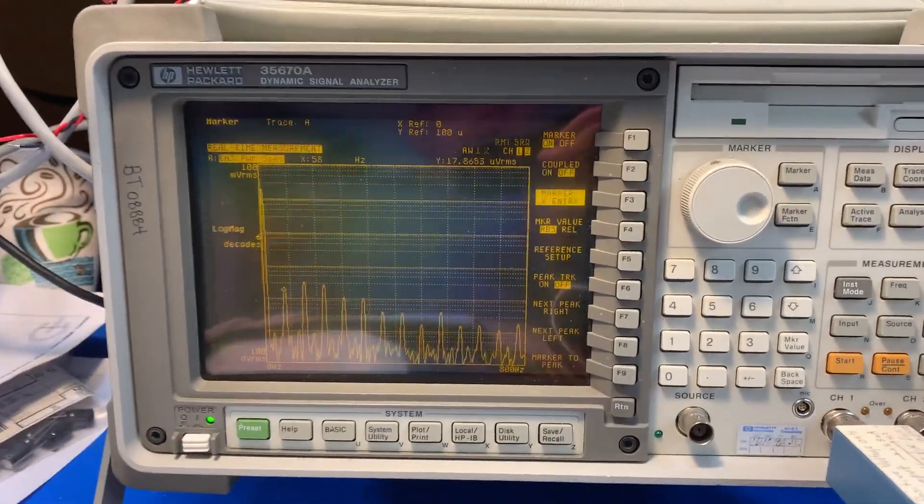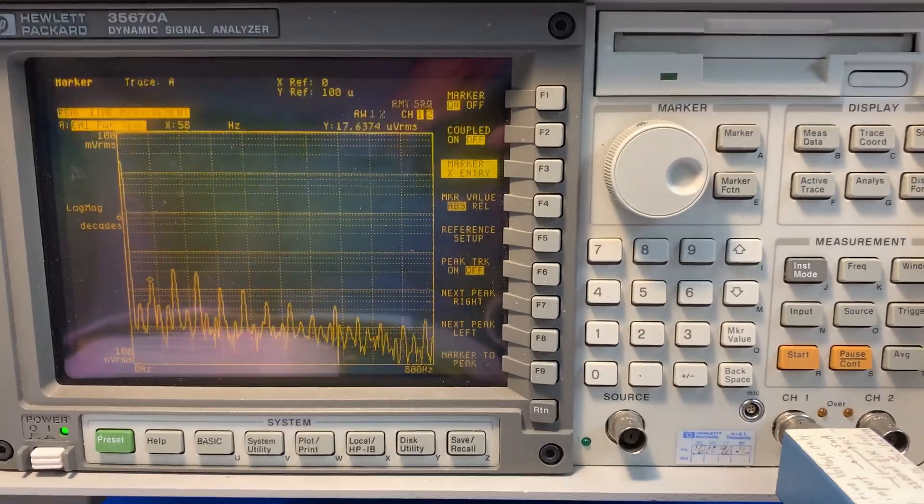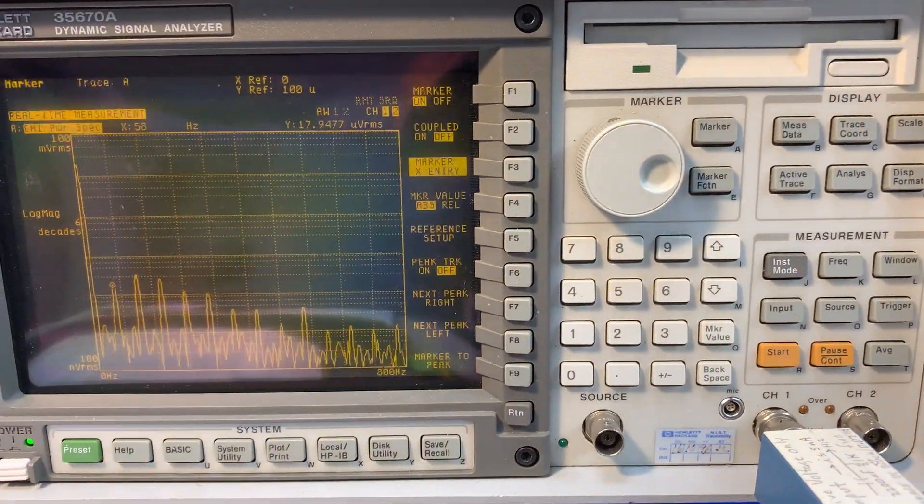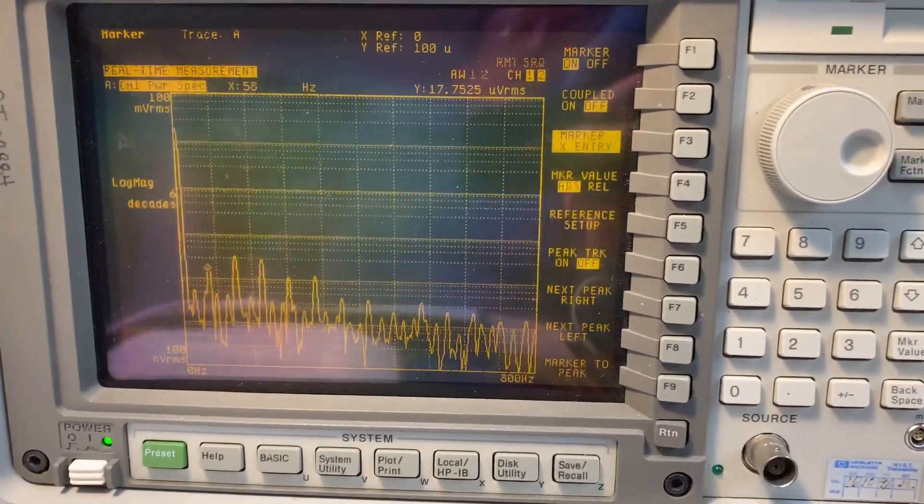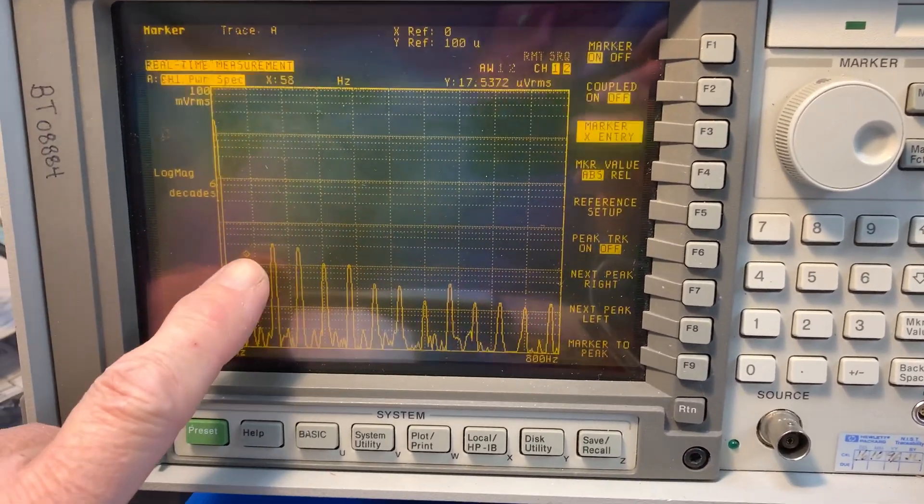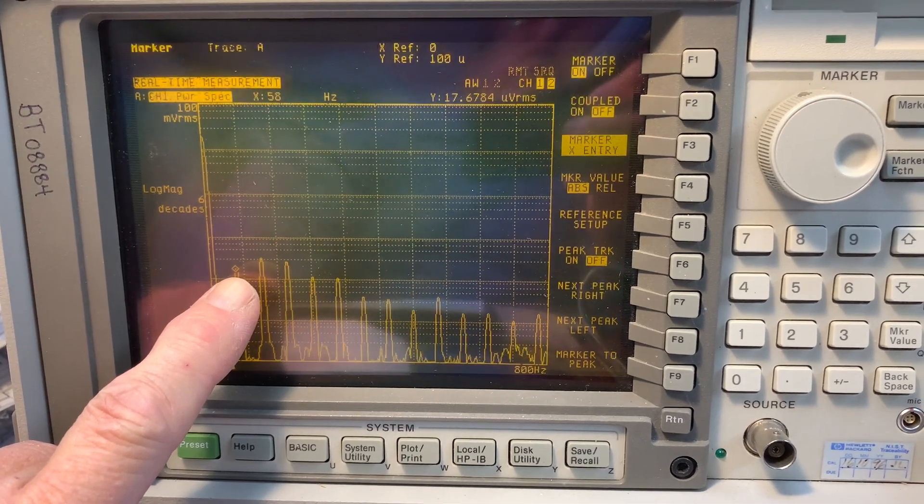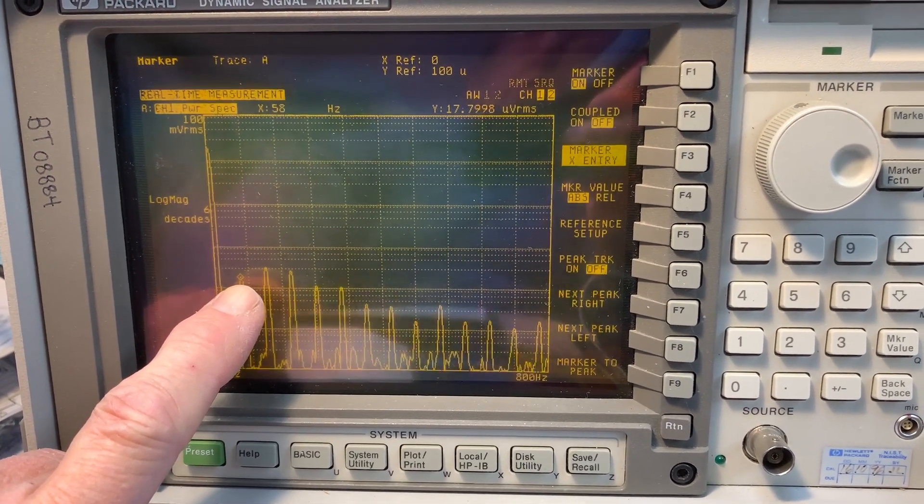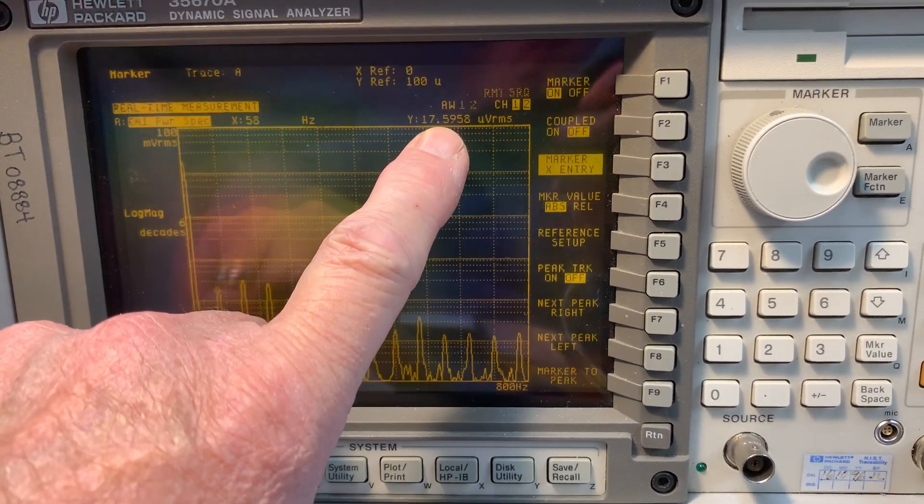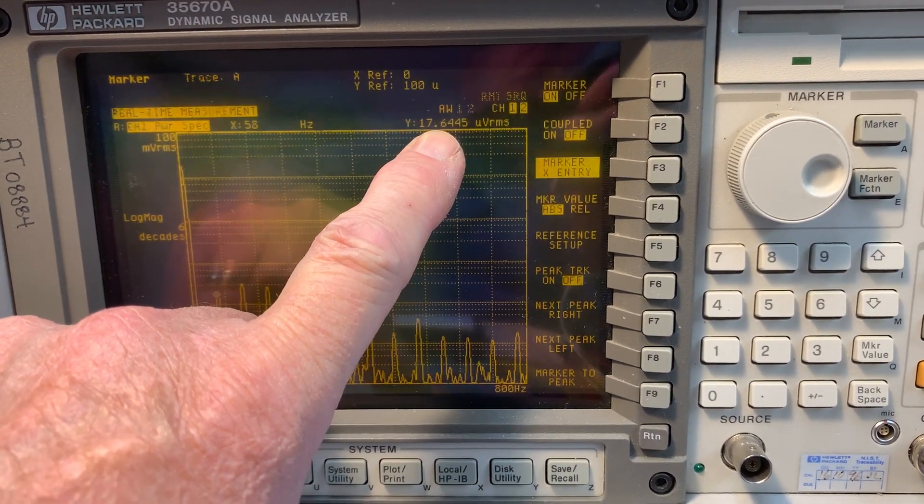And we've got here a dynamic signal analyzer. You can see that. So you get an idea of the, this is 60 Hertz level coming out of the circuit. And we're looking at 17 micro volts.